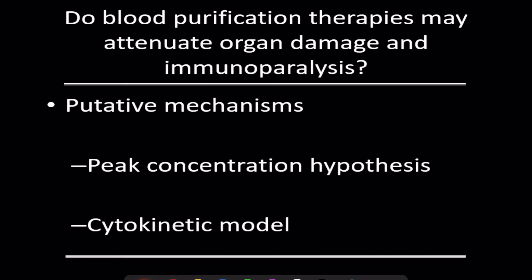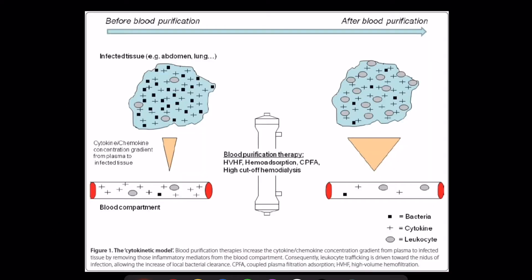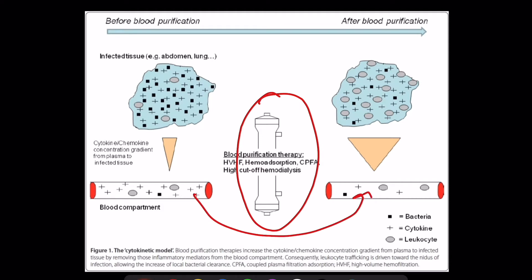There are two proposed mechanisms by which blood purification may work. The first is by reducing the peak concentration of cytokines, thereby reducing their effects. The second is the cytokinetic model, where blood purification reduces cytokine levels in the blood, creating a gradient from tissue into the blood, removing cytokines from local tissue and enhancing entry of immune cells into the local tissue.